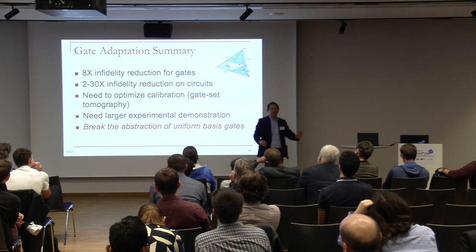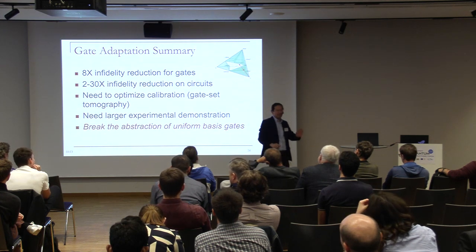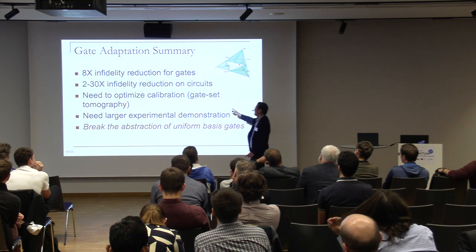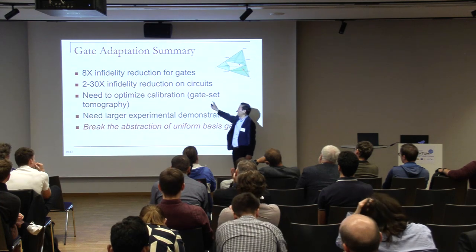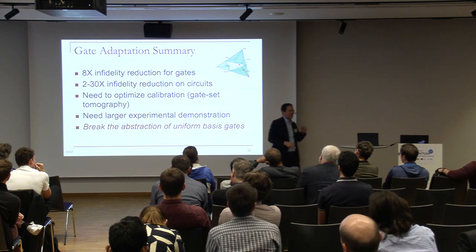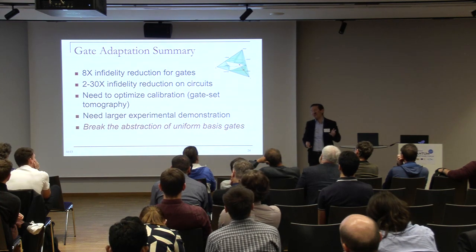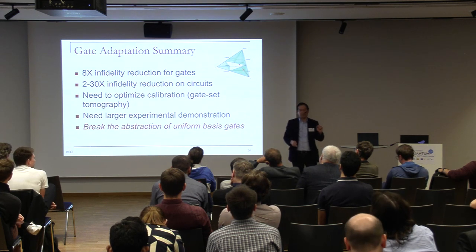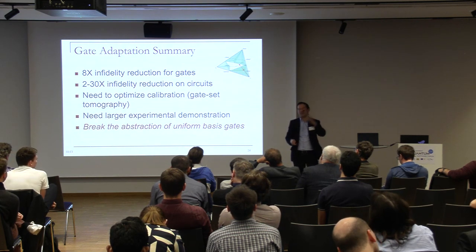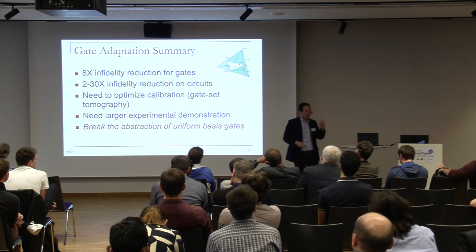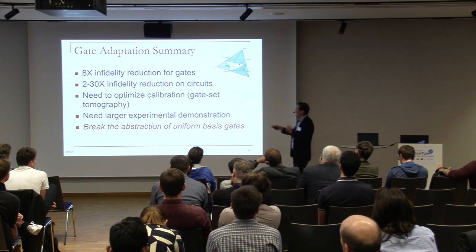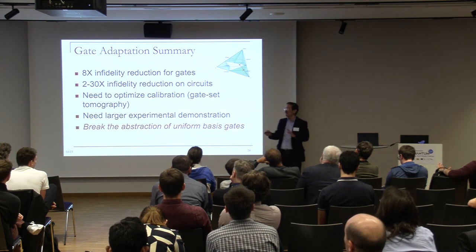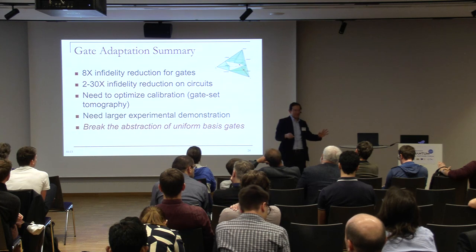If we do this — and similarly for entangling gates — we get significant reduction in error, and on benchmarks an even higher reduction because you have many gates. The cool thing is we broke the abstraction of uniform basis gates: now we can have any kind of gate. The hard part is that you have to calibrate a different gate for every pair of qubits, which is potentially very hard, although since gates may not change too much over time you can do the hard calibration once and recalibrate later.